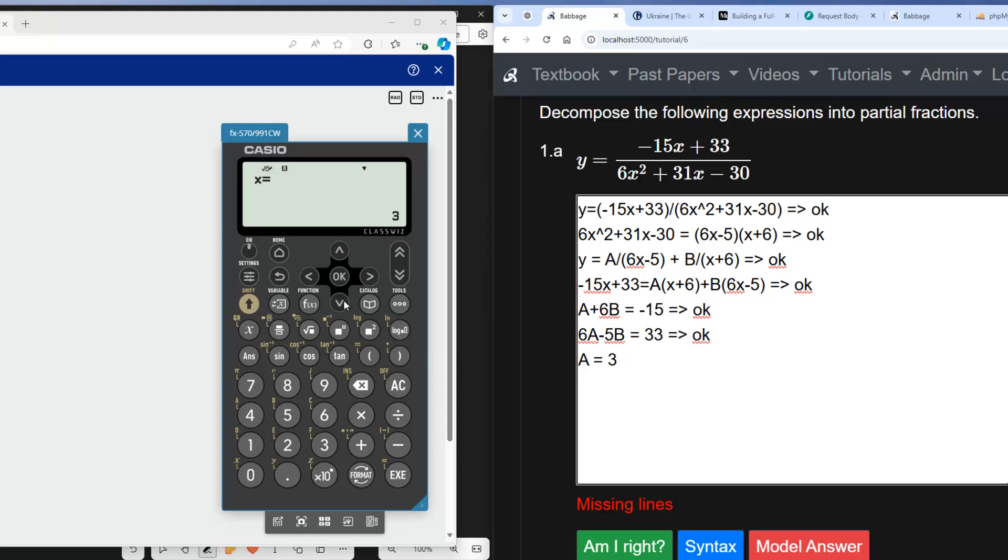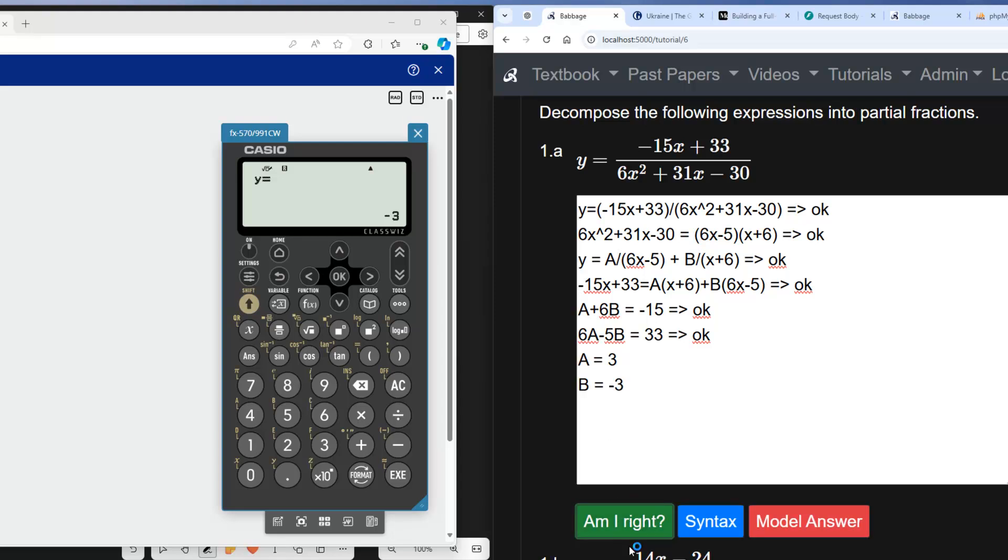And then if we press the down arrow, we can get the second value. They call it y, we call it B. So B is equal to -3. And are we right so far? Yes, we are. Good.